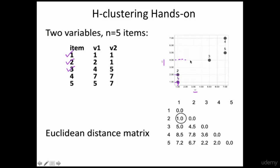For the third entry you have V1 which is 4 and V2 which is 5. For the fourth entry you have 7 and 7. And for the fifth entry you have 5 and 7. So for everything you have an x and y-axis value.